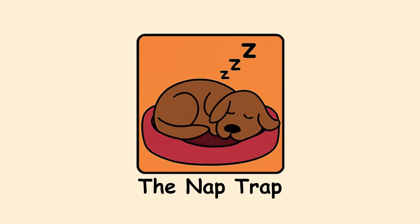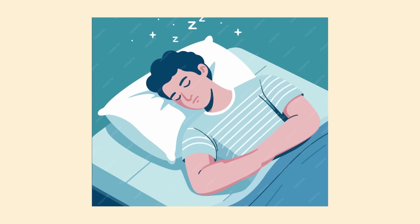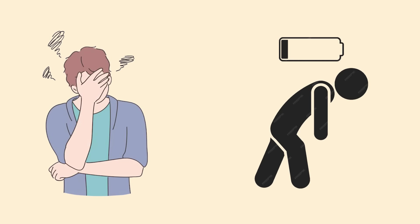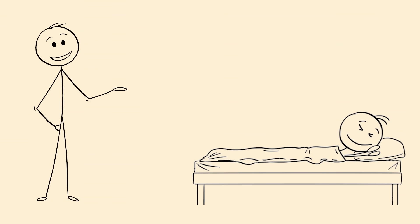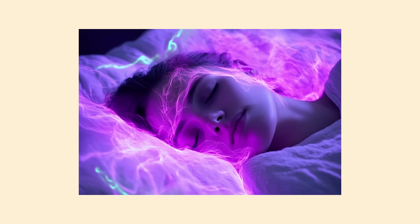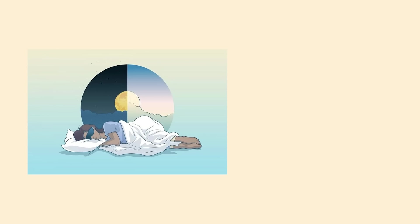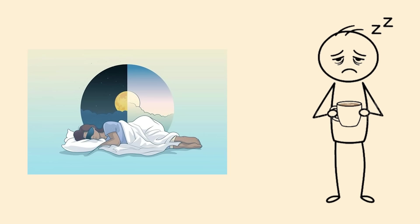The Nap Trap. You lie down for a quick 20-minute power nap and wake up four hours later, completely disoriented and feeling worse than before. This happens when you enter deep sleep instead of staying in light sleep stages. After 30 minutes, you risk entering slow-wave sleep, which causes severe grogginess when interrupted. That refreshing nap turned into a full sleep cycle that your body wasn't prepared to exit.